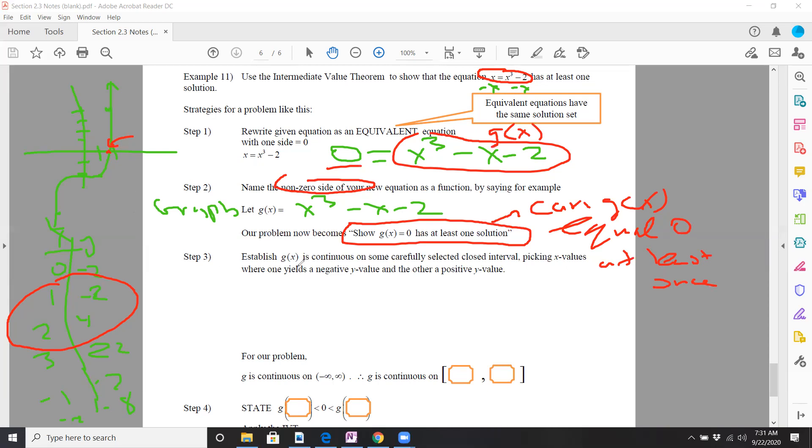So you must establish the fact that g of x is continuous in some carefully selected closed interval, picking x values that yield one negative y value and one positive y value. I did that over here. So it helps to rewrite the equation, plug in some values, or use a little intuition and say, well, if I plug in this x value, y is negative. If I plug in this x value, y is positive. So that's what I did.